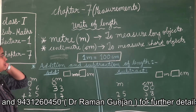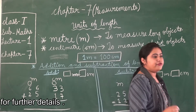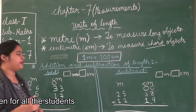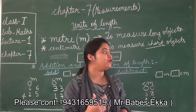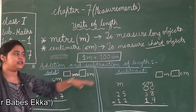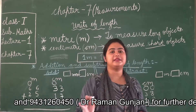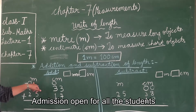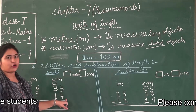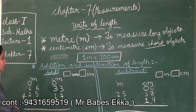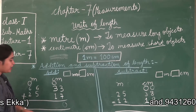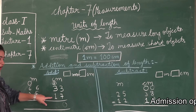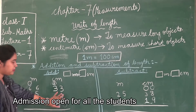Now we are going to solve some questions based on addition and subtraction of length. You should not worry about this because the process we learned in Class 1 previous chapters for addition and subtraction is the same. Just keep in mind that 1 meter is equal to 100 cm. For example, in the addition question, the first column is centimeter and the second column is meter. We solve centimeter first: 7 plus 3 is 10, so we write 0 and carry 1 forward. Then 3 plus 1 plus 1 equals 5, so we write 5 in the centimeter column.